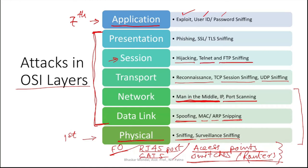In the presentation layer, phishing-type attacks occur, and SSL and TLS sniffing also happens here. These are the seven layers of the OSI model and the kinds of attacks that happen at each layer.